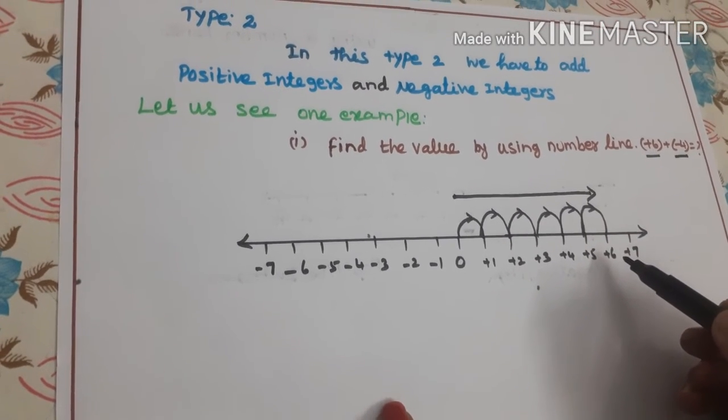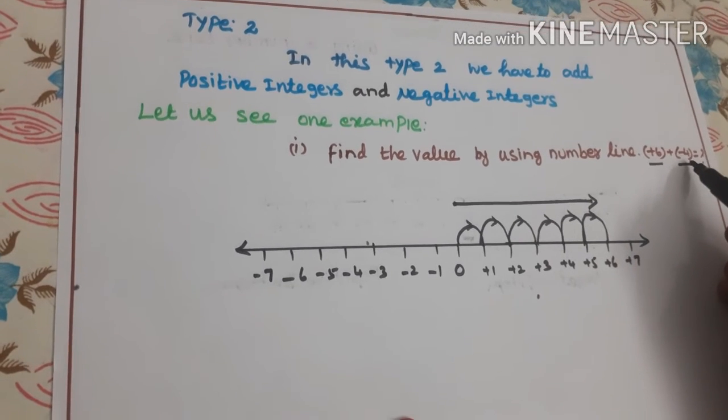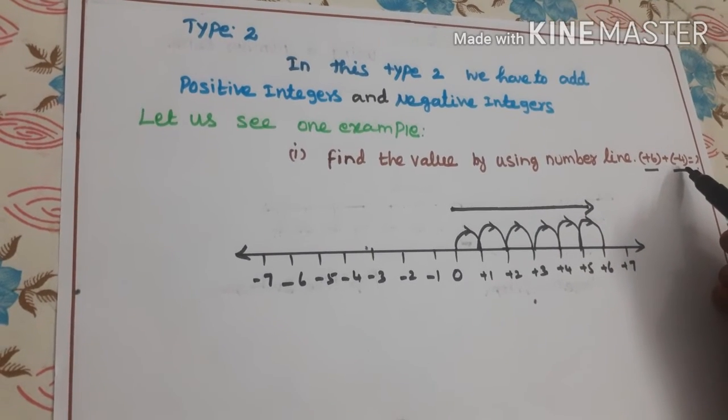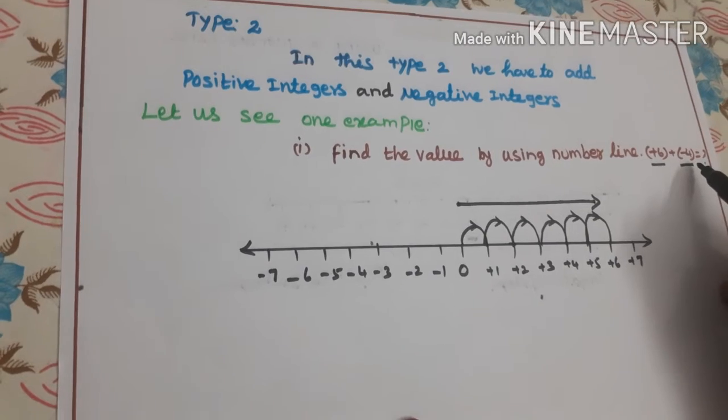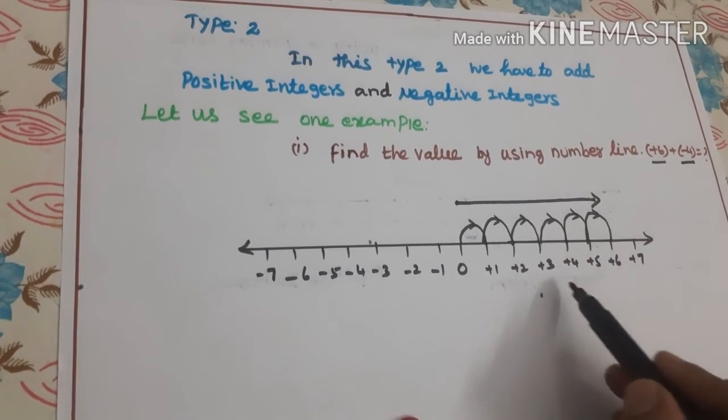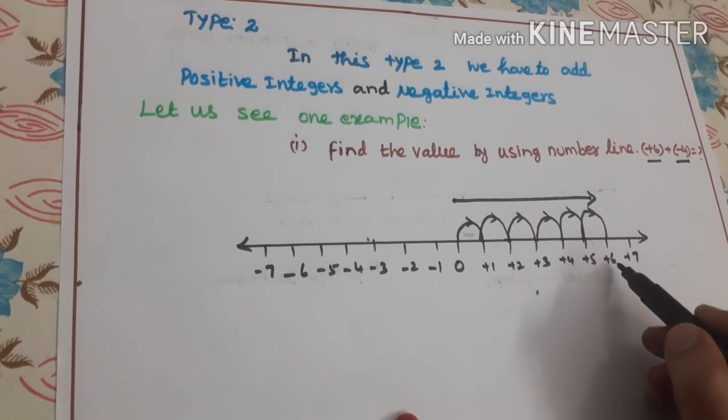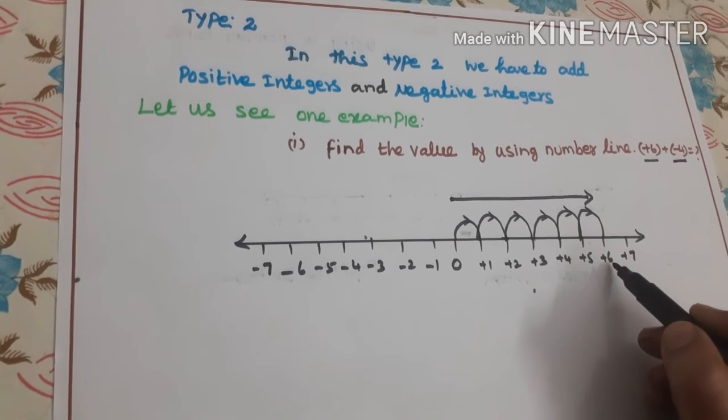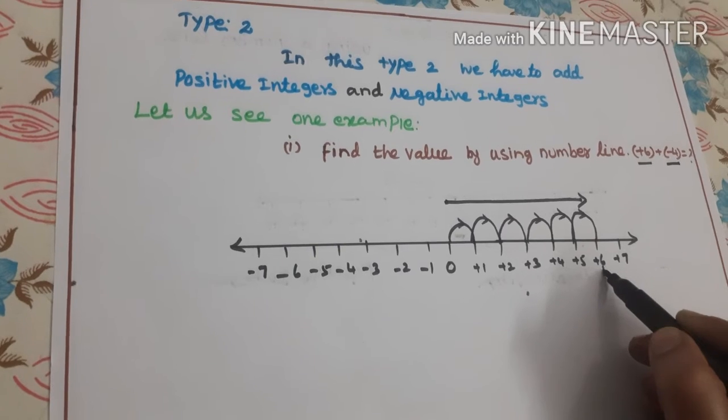Then we will take the second number. The second number is negative 4. Since it is negative, we have to move left from positive 6. We have to move from here. We have to move 4 places.